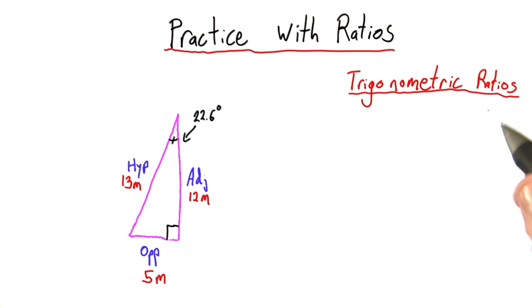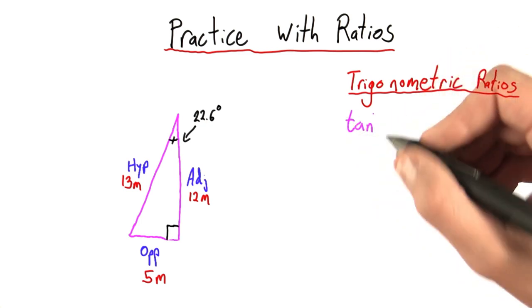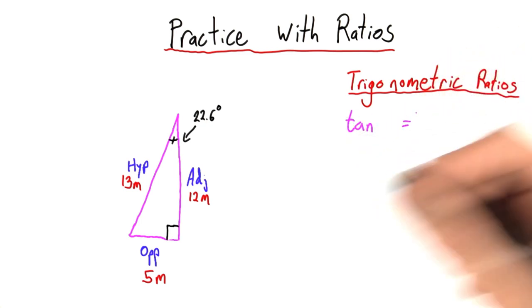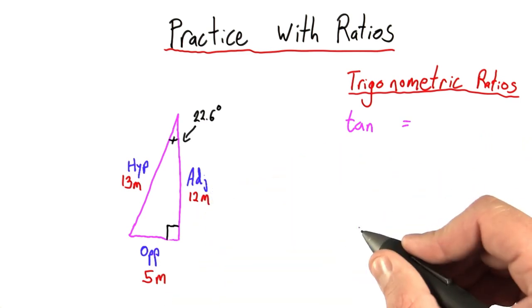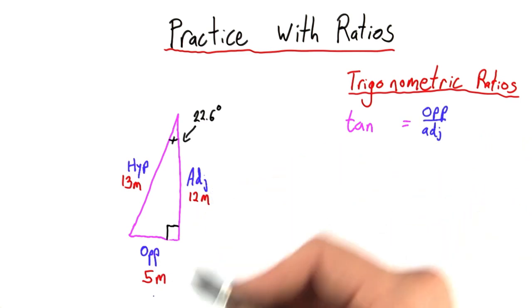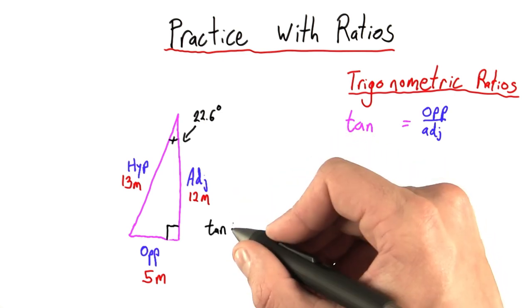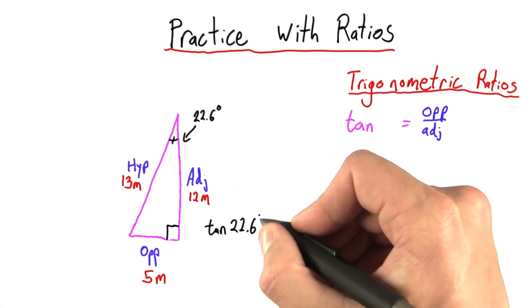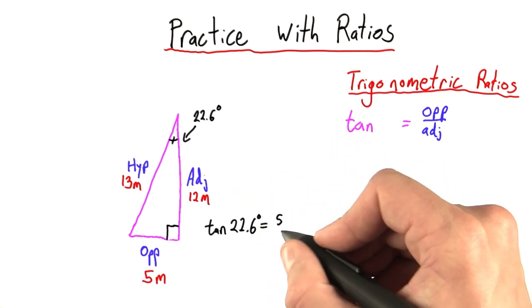And so the first trigonometric ratio you're going to learn is the tangent. And the tangent of an angle is always equal to the opposite over the adjacent, which in this case would have been 5 over 12. I would write that by saying the tangent of 22.6 degrees equals 5 over 12.